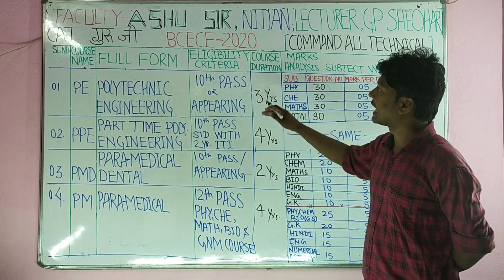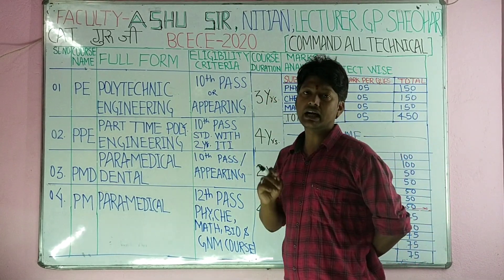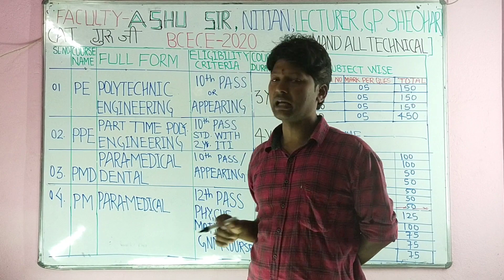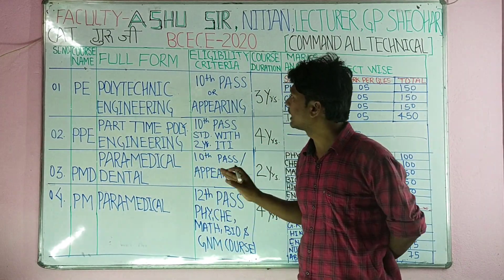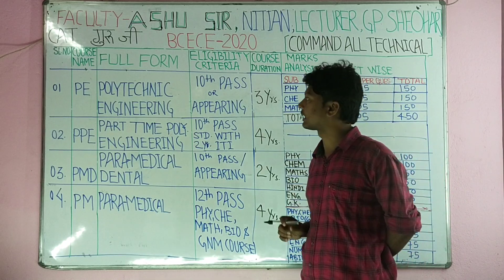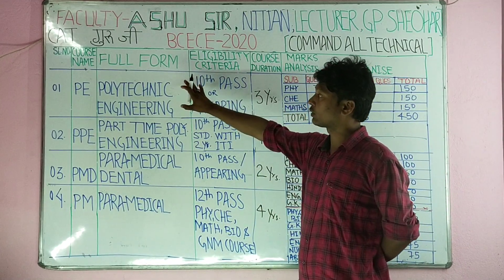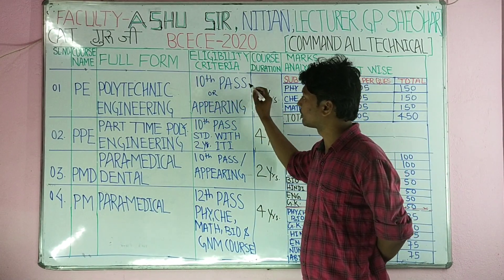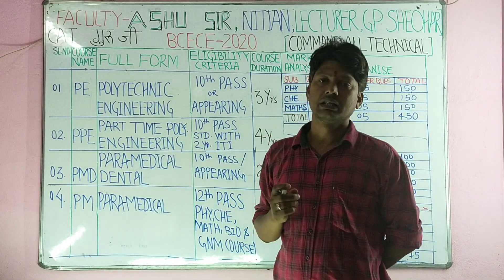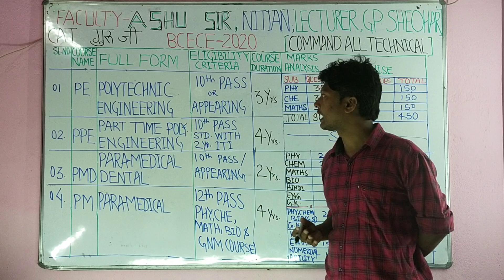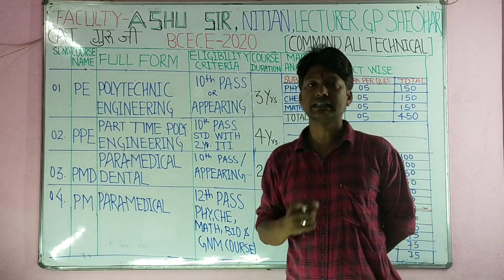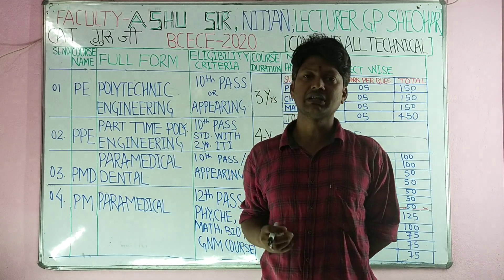The next column is eligibility criteria — the minimum requirements. If you meet the minimum eligibility criteria, you can appear in the exam.